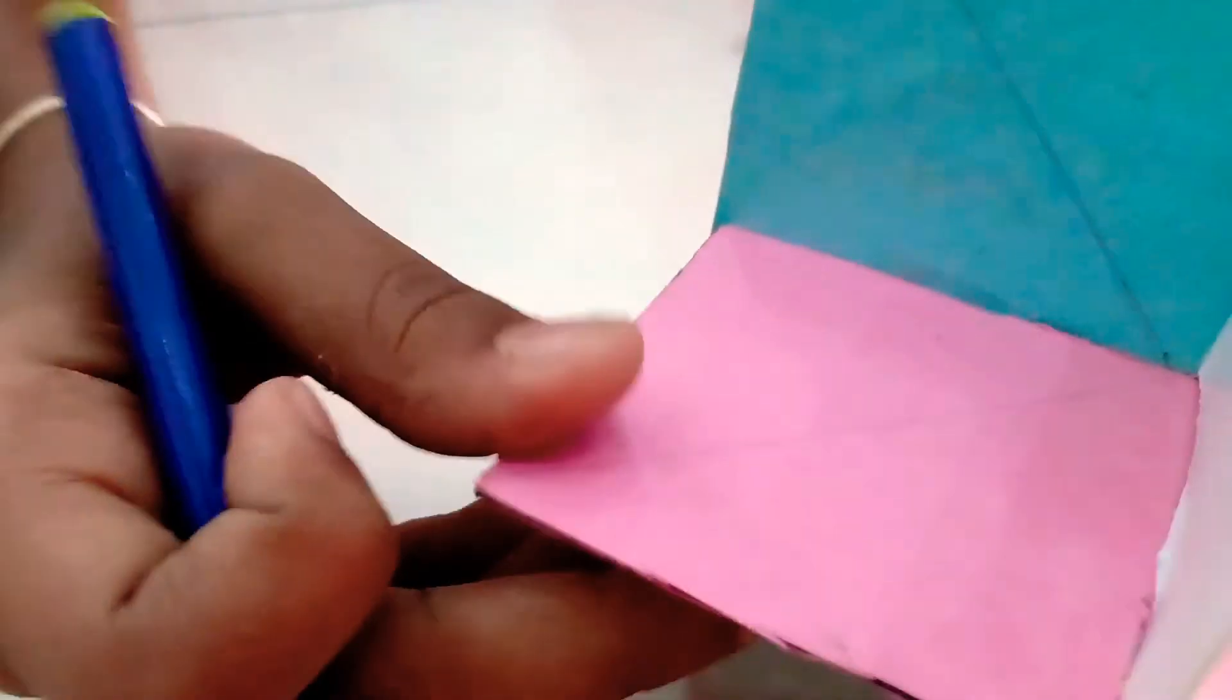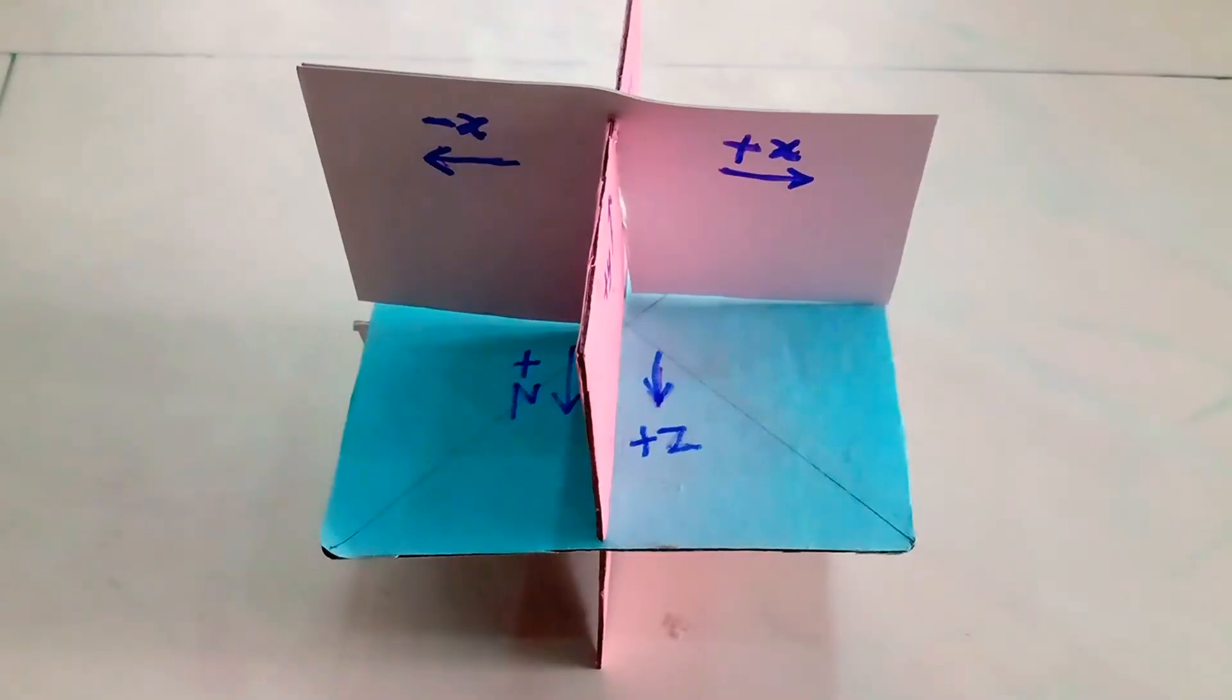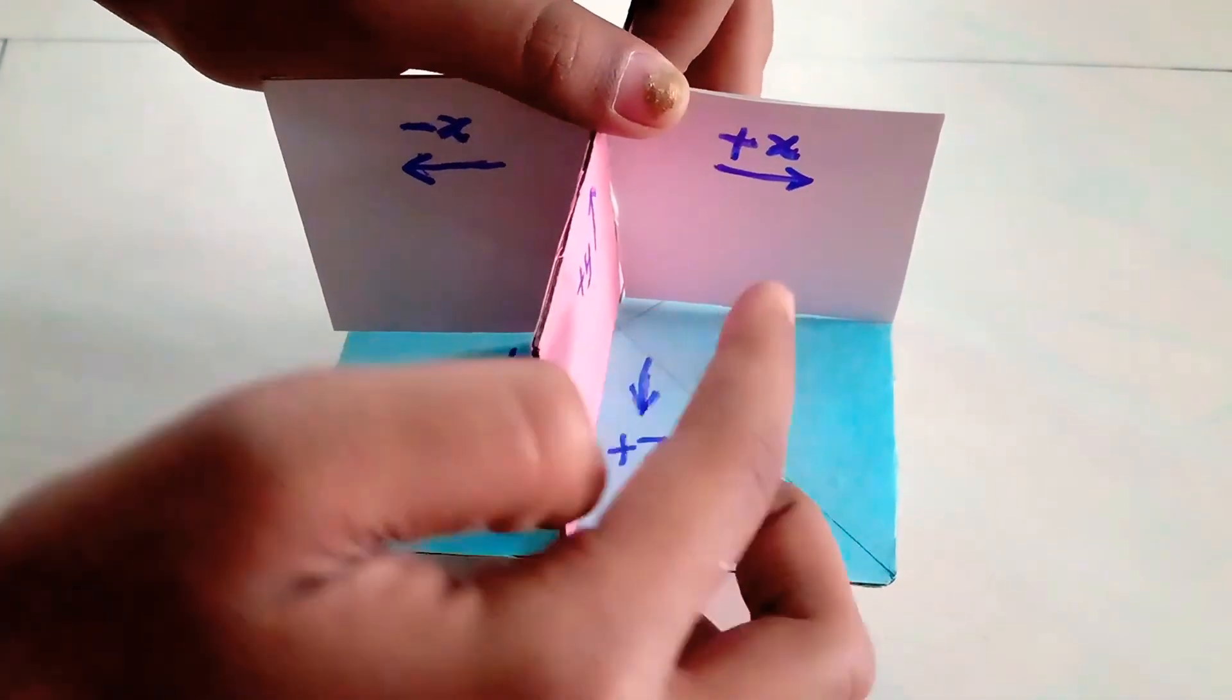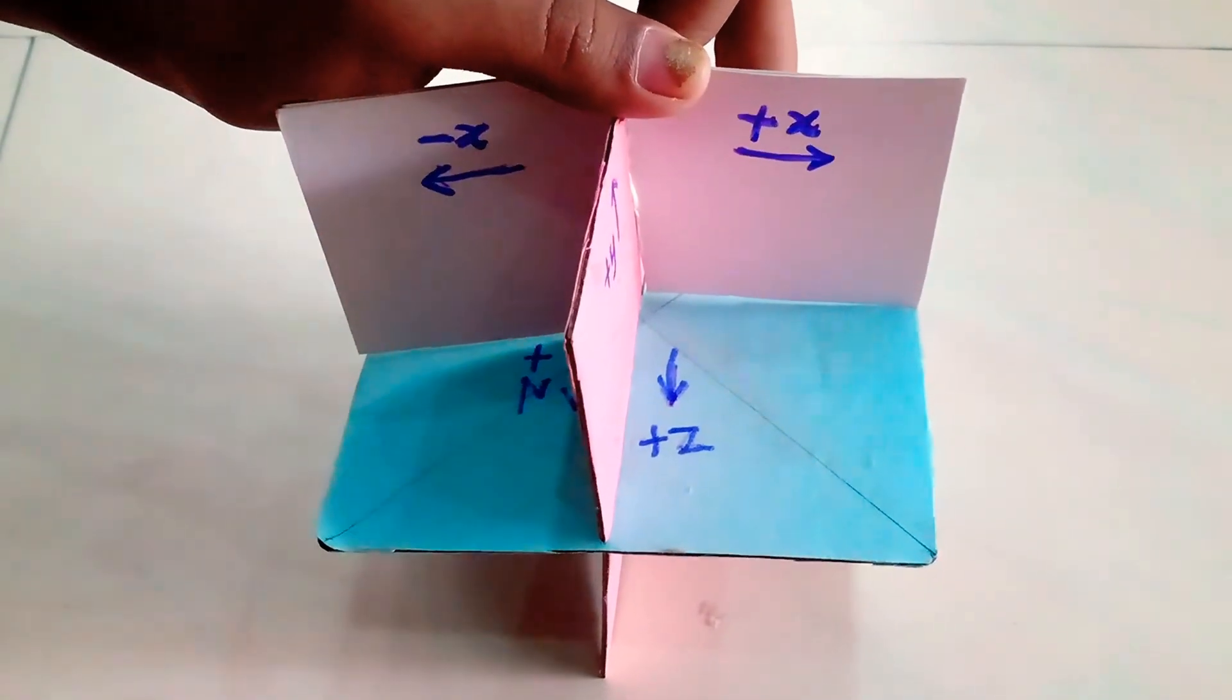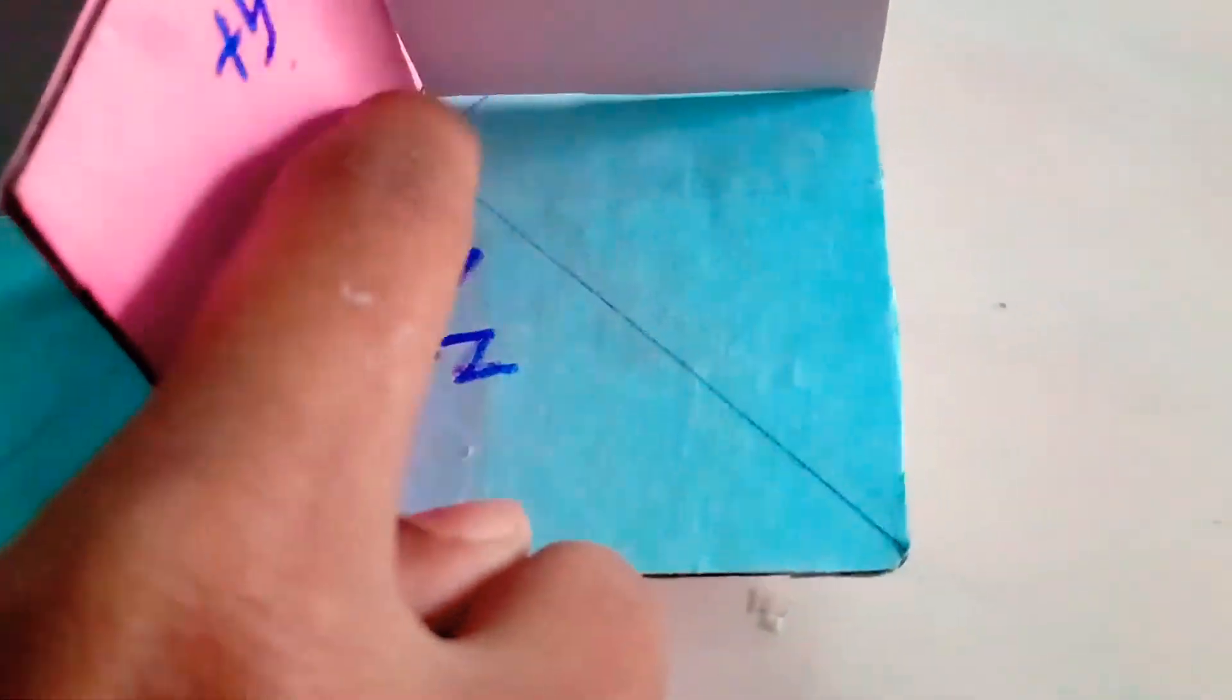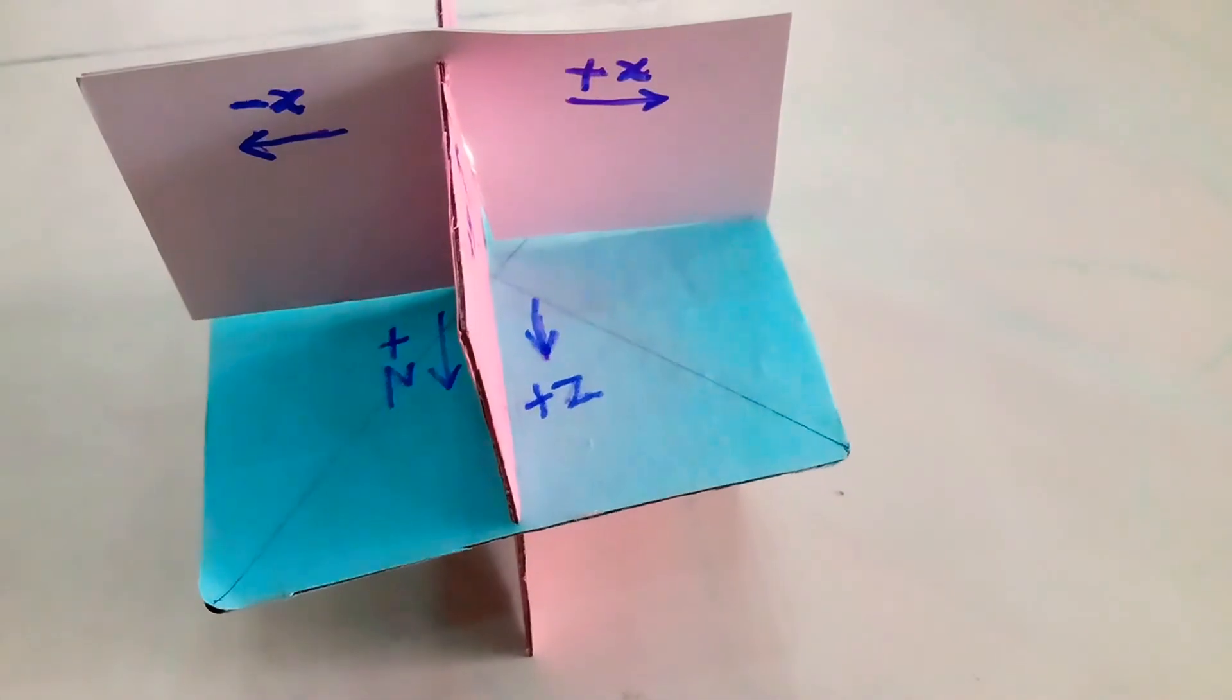Choose any side and then mark X and Y. So I have marked it now. This is plus X, this is minus X, this is plus Y, and this is minus Y. This is plus Z and this is minus Z. So now our concepts will become more clear.